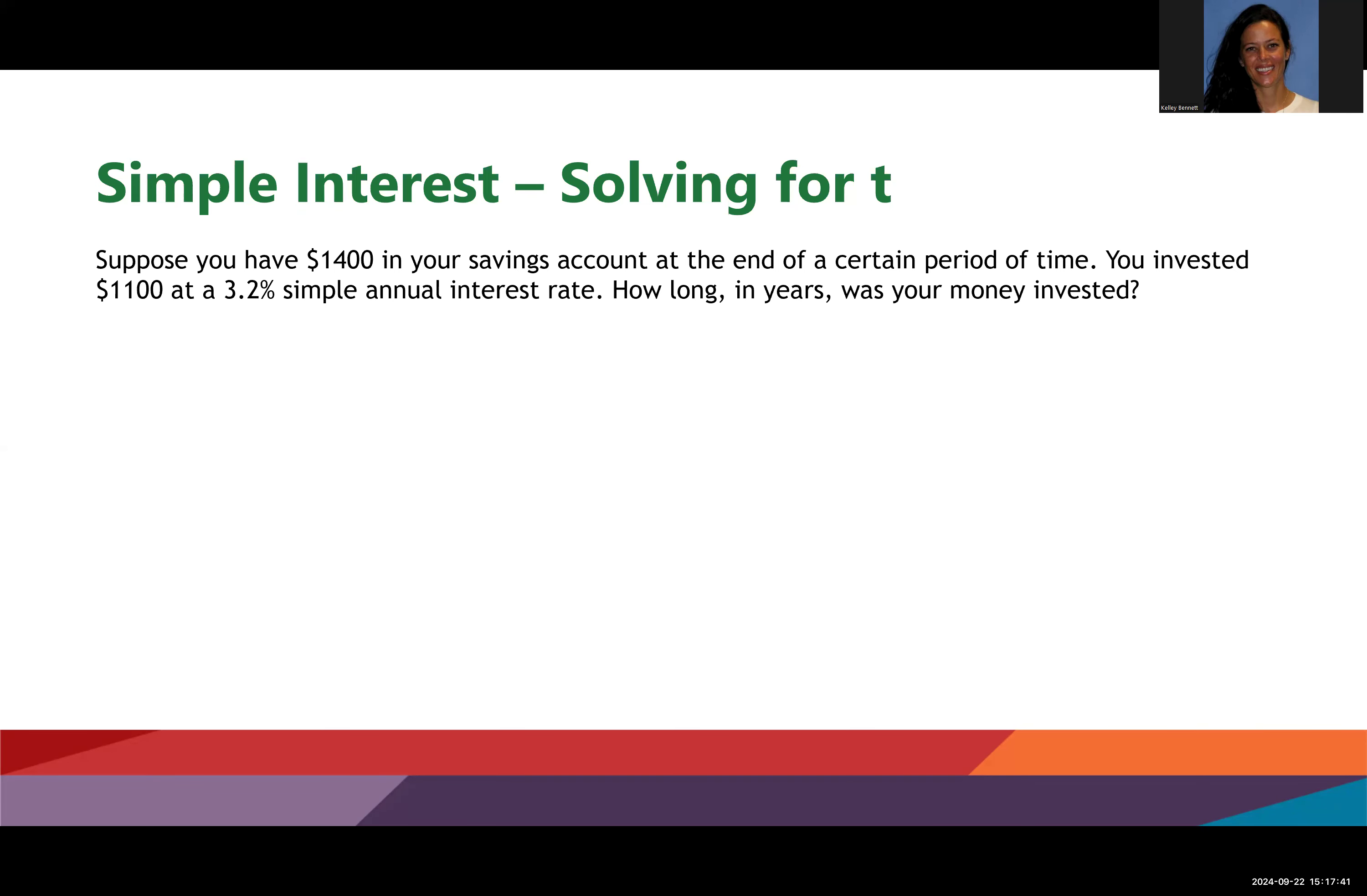In this problem, we're going to solve for T with a twist. Suppose you have $1,400 in your savings account at the end of a certain period of time. You invested $1,100 at 3.2% simple interest rate. How long in years was your money invested? So this is a question asking about time.